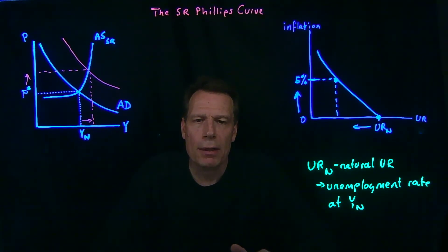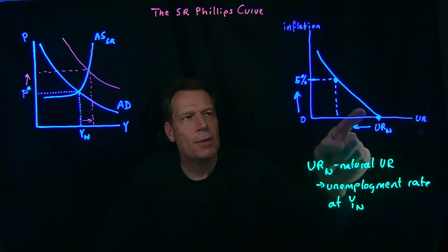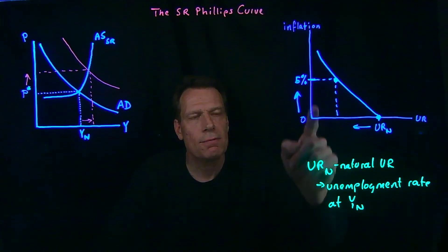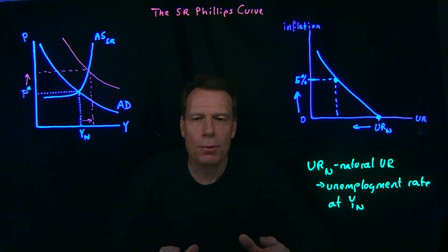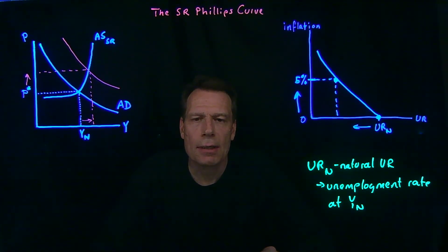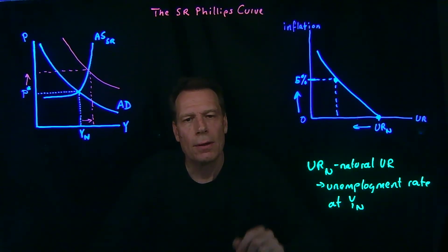Economists then came to policymakers and said, look, we can tell you that there's a trade-off between inflation and unemployment. You can push unemployment below the natural level, but the price you're going to pay is inflation. So depending on how comfortable you are with inflation, that'll determine how far you want to push this process. So the Phillips curve, this trade-off between inflation and unemployment that economists uncovered in the 1960s, doesn't tell you what the right policy answer is. It just tells you that there is a trade-off, and it leaves it up to policymakers to figure out where we should settle on that Phillips curve.